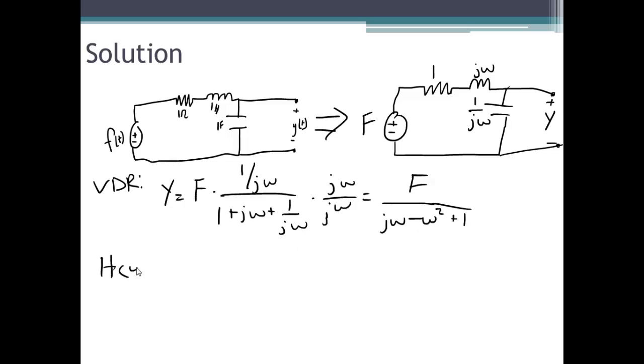The frequency response h of omega is defined as the output phasor Y over the input phasor F. So in our case, the frequency response will be 1 over j omega minus omega squared plus 1.